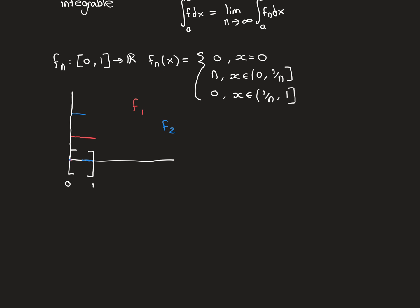Now let's look at f2. f2 maps the point 0 onto 0, and then on the interval from 0 to 1/2 it maps onto 2. After you pass one-half, the rest of the domain from 1/2 to 1 is mapped onto 0. That's f2. Finally, f3 maps 0 onto 0, then on the interval from 0 to 1/3 it maps onto 3, and from 1/3 to 1 it maps onto 0. Hopefully those three give you an idea of what this sequence does.